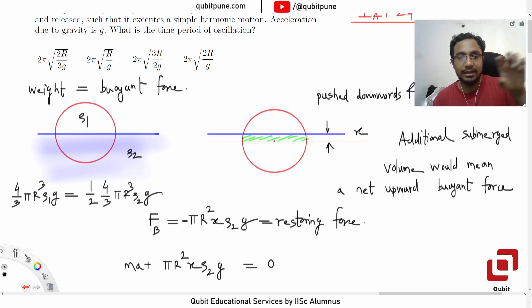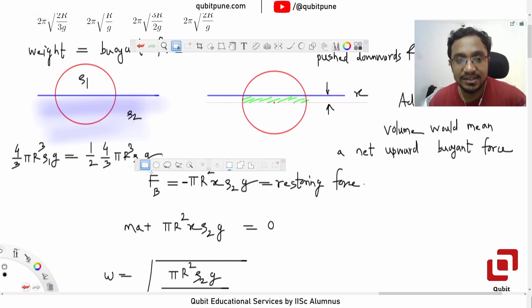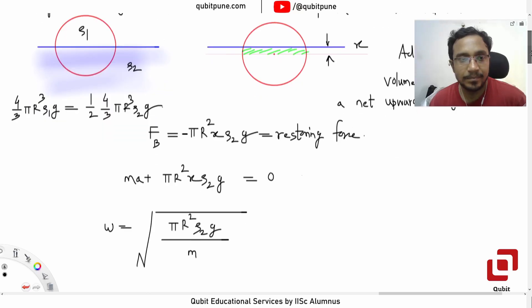Raise your hands if you understood that part. Everybody understood that? Very good. So now we can find the densities' relation. Student asks: Why is it half? Because the submerged volume is half. Okay sir.